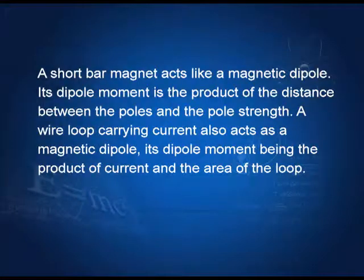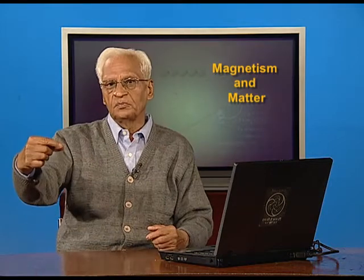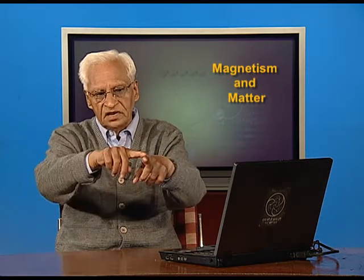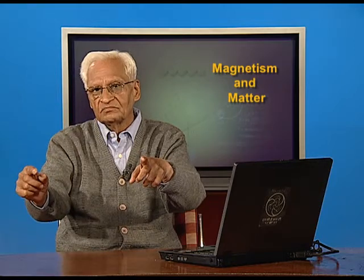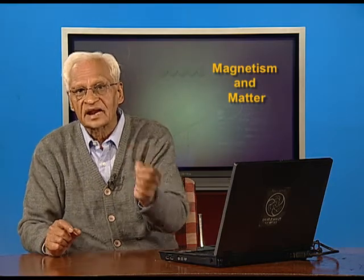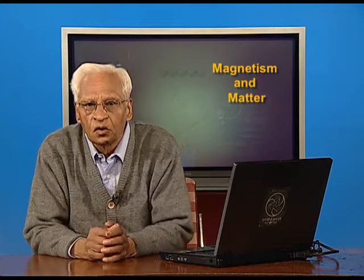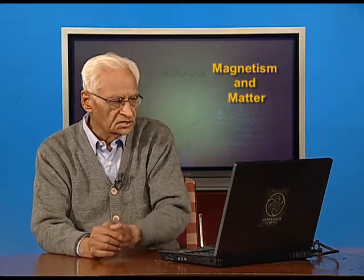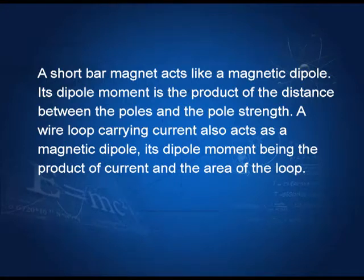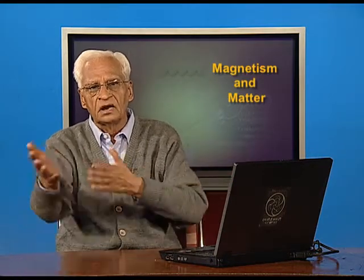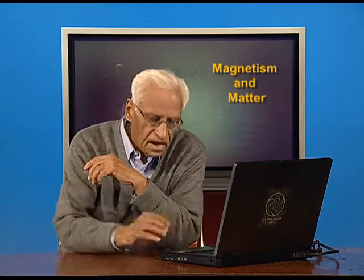A short bar magnet acts like a magnetic dipole, and its magnetic moment is the strength of the pole times the separation between the poles. It does not matter whether they are in a straight line or not — even if the magnet is bent, the dipole moment is the distance between the two poles multiplied by the pole strength. The product of these two quantities is called the dipole moment of the magnet. A magnetic dipole behaves exactly like an electric dipole, which we have studied many times before.